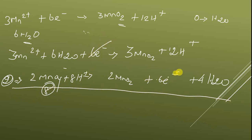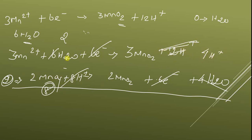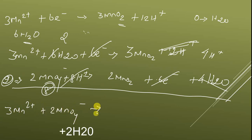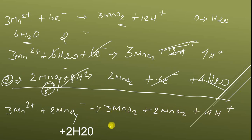Now cancel the 6 electrons on both sides. For water: 4 H2O on one side and 6 H2O on the other, leaving 2 H2O. For H+: 8 H+ and 12 H+ cancel to leave 4 H+. The final equation is: 3Mn2+ + 2MnO4- → 5MnO2 + 4H+. This is the final balanced equation.